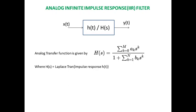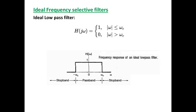H(s) is nothing but the Laplace transform of the impulse response of H(t). Now, having this in mind, we will see what are the ideal frequency selective filters. Here we see this is an ideal low pass filter. Its characteristic is that it allows only specific frequencies at low frequency — from minus omega_c to plus omega_c the frequencies are being allowed, and this is called as pass band. The remaining higher frequencies which are not allowed are called as stop band. This filter can be modeled by the equation H(jω) = 1 for minus omega_c to omega_c, and 0 for other frequencies.